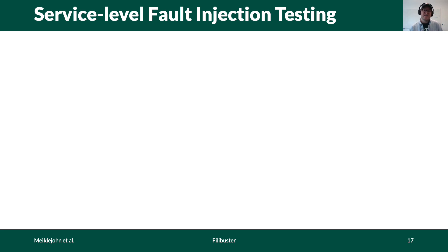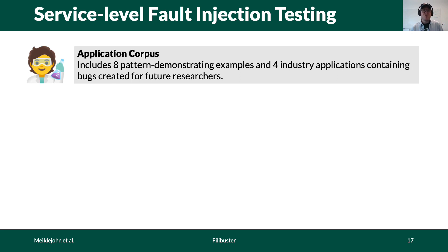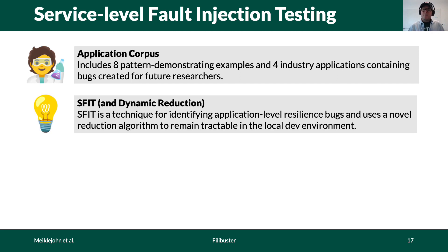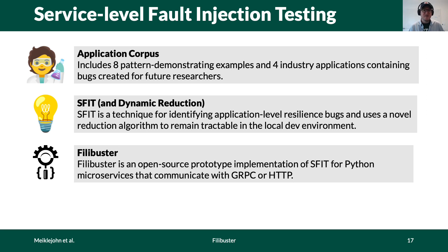Today we talked about service-level fault injection testing, our paper at SOCC, which includes an application corpus to enable microservice resilience testing research in the future. The corpus contains eight smaller microservice examples demonstrating a single particular pattern and four recreations of industrial applications: Audible, Netflix, Expedia, and MailChimp. We proposed service-level fault injection testing with an optimization called dynamic reduction that enables local development environment resilience testing at very low cost. We also built a prototype implementation called Filibuster, available on GitHub for Python applications communicating using gRPC or HTTP. Thank you very much.